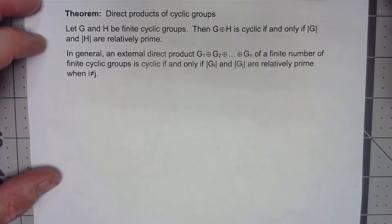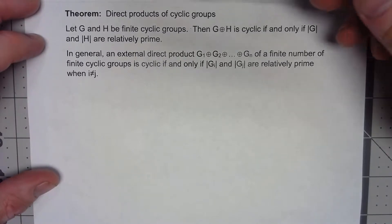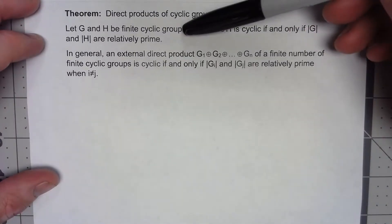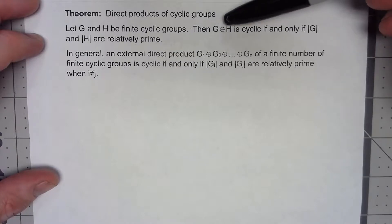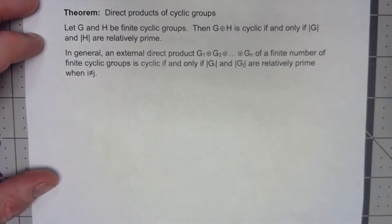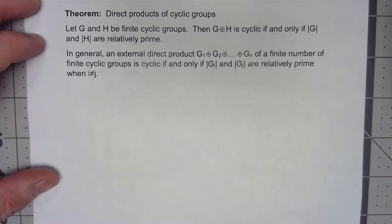Let's take a look at a theorem about cyclic groups. So suppose we've got two finite cyclic groups and we're going to take the direct product of them. Sometimes that's going to be cyclic and sometimes it won't be.